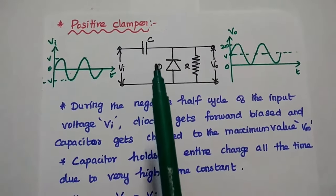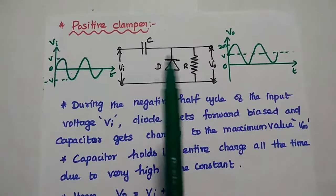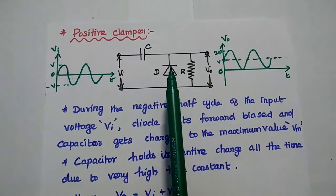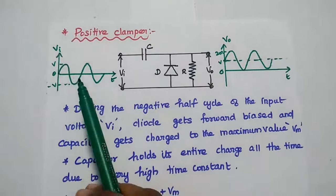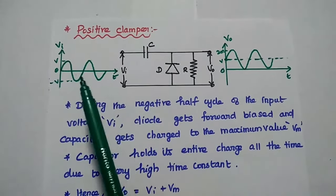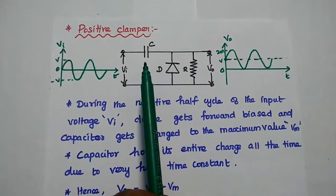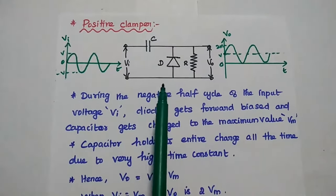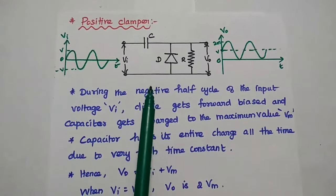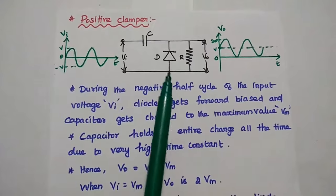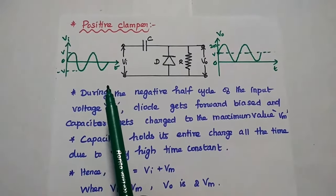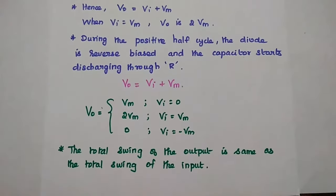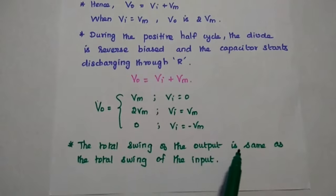Next is the positive clamper, which is the same as the negative clamper with only one change: the diode is connected in reverse — the negative of the diode is connected with the input side. During the first quarter of the negative half cycle, the diode is forward biased (negative and negative), and the capacitor starts charging to the maximum value on the negative side. Once it reaches the negative peak value, it acts as a battery, holding its charge due to the large time constant. During the positive half cycle, it discharges through the resistor, giving V₀ = Vi + Vm. The total swing of the output is the same as that of the input.